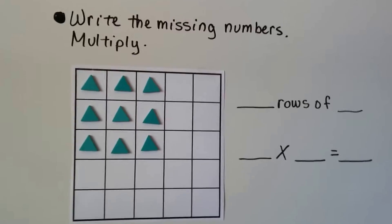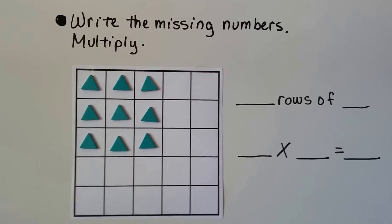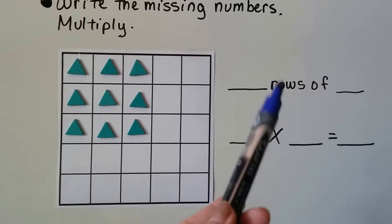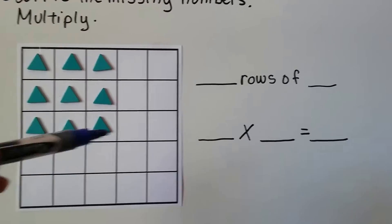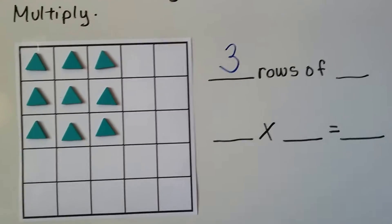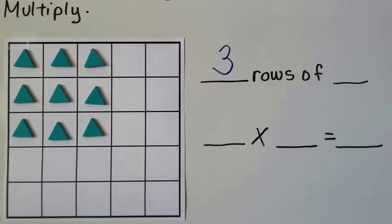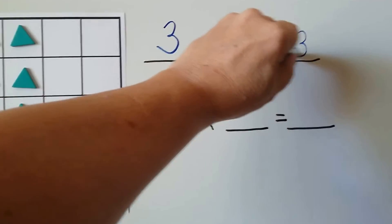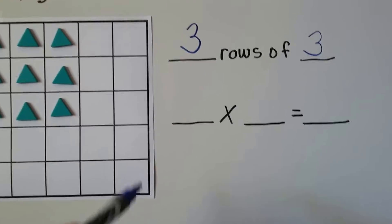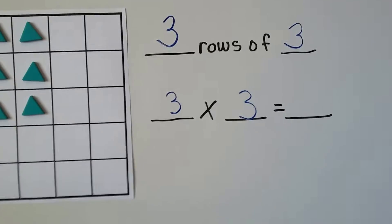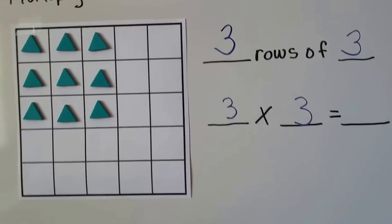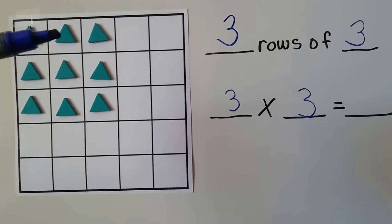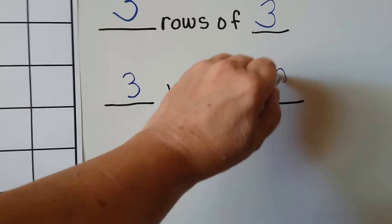Let's take a look at this. It says write the missing number and multiply. We need to find blank rows of blank. How many rows do we have here? We have 1, 2, 3 rows. And how many are in each row? We have 1, 2, 3. So we have 3 rows of 3. Our multiplication sentence is going to be 3 times 3. What is 3 times 3? We can count these: 1, 2, 3, 4, 5, 6, 7, 8, 9. So 3 times 3 is 9.